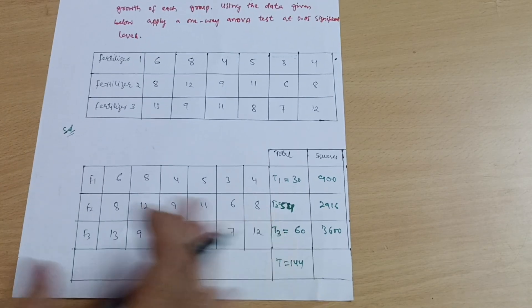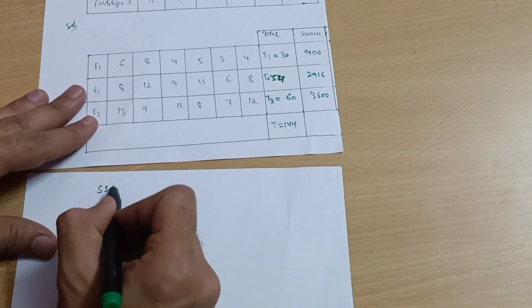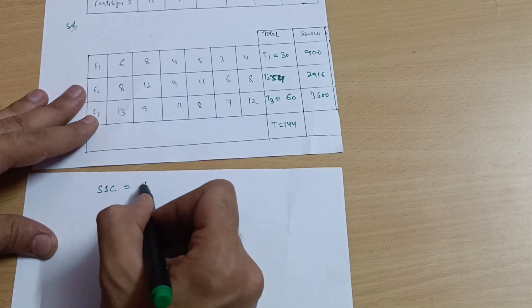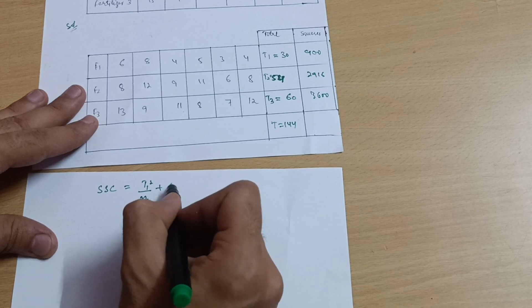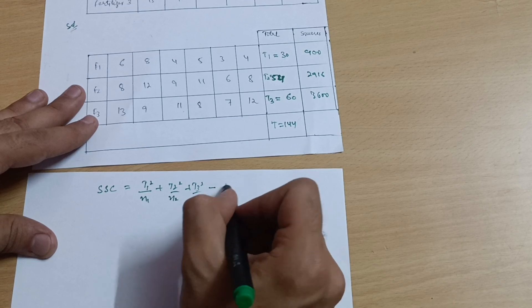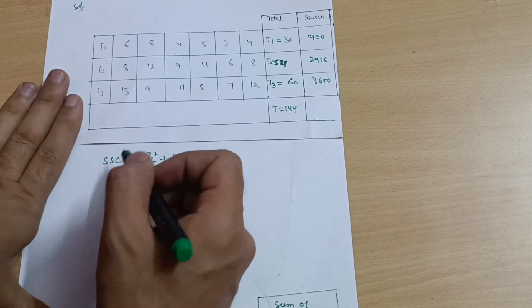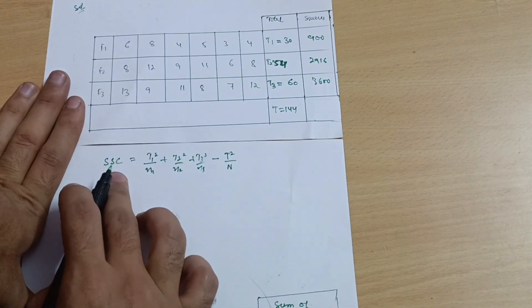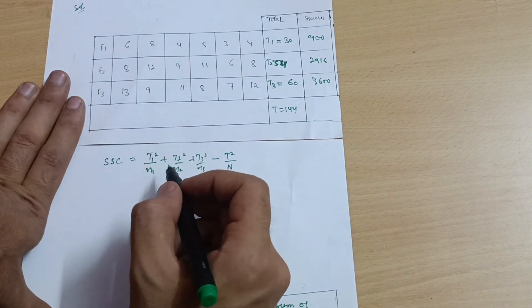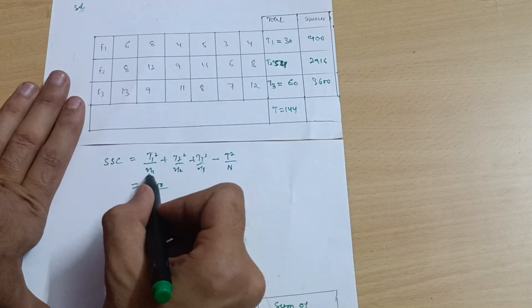Now we use the SSC formula — that is sum of squares between the samples. It is always equal to T1² / n1 + T2² / n2 + T3² / n3 − T² / n. There are two possibilities: sum of squares between the samples and sum of squares within the samples. We must calculate SSC first in order to build the ANOVA table.